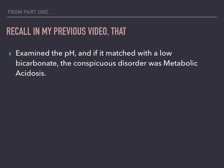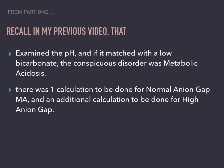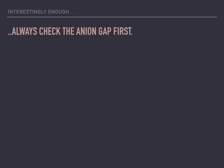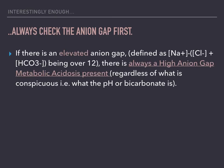There was one calculation to be done for normal anion gap metabolic acidosis and an additional calculation to be done for high anion gap. The anion gap is very important — in fact, you should always check the anion gap first.